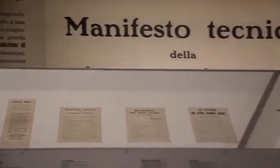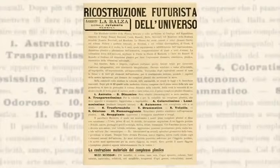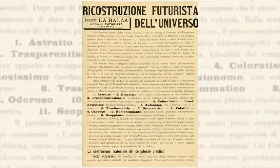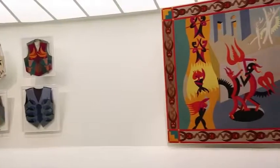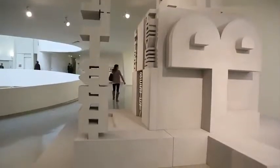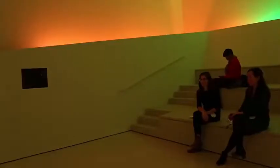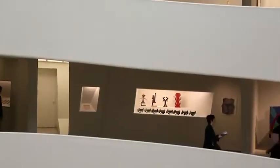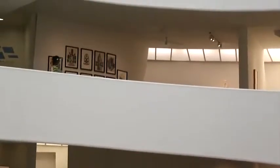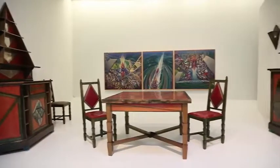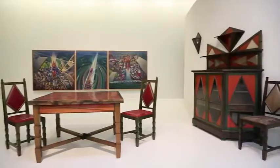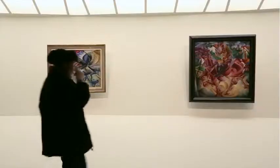The Futurist Reconstruction of the Universe — the subtitle of the show — is a manifesto written by Giacomo Balla and Fortunato Depero. The idea was that the whole world was meant to be Futurist, and we have conceived the show in that way, taking another main Futurist principle: to put the spectator at the center of the artwork. Thus, entering the Guggenheim and being surrounded by the ramps, you are at the center of this reconstruction of the universe — the total work of art, l'opera d'arte totale — which is another important theme.